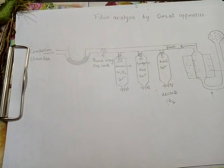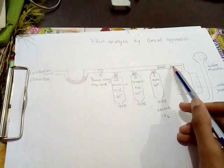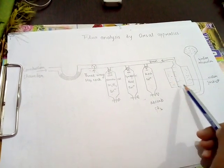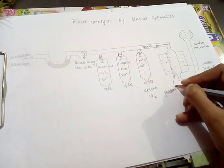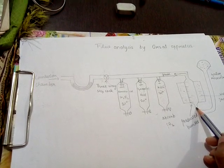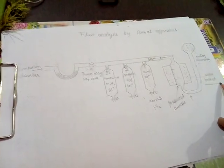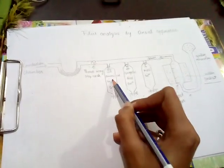Using the Orsat apparatus, we determine all of these gases. The apparatus has a long horizontal tube with a three-way stopcock at one end and a graduated burette at the other end. The lower end of the burette is connected to a water reservoir, and the burette is surrounded by a water jacket.